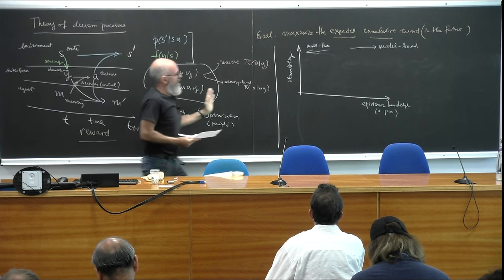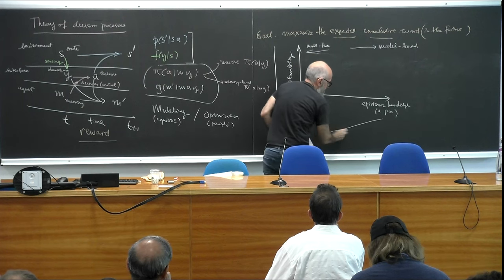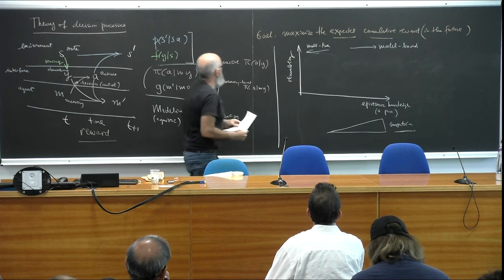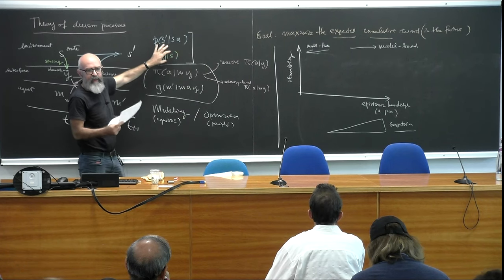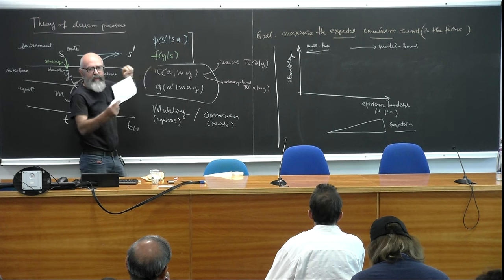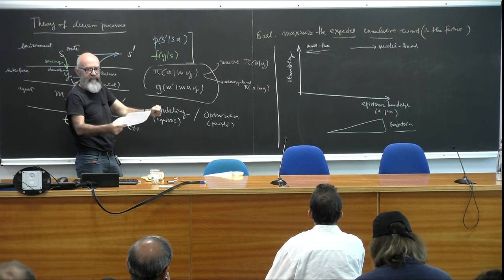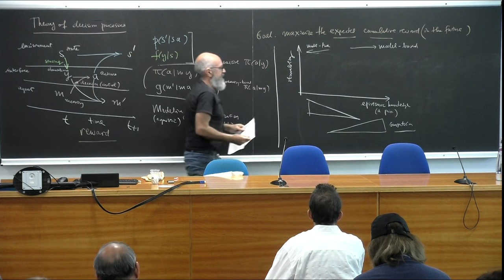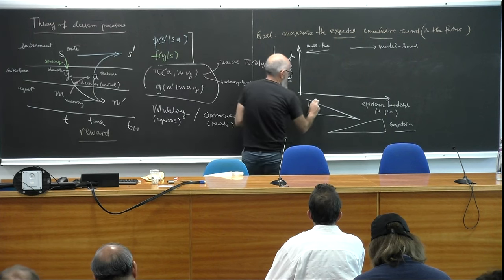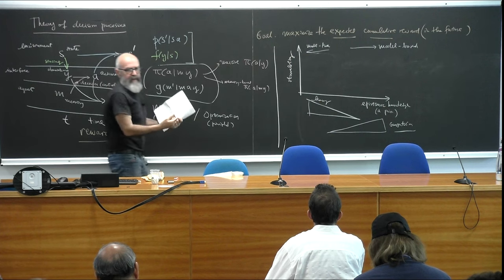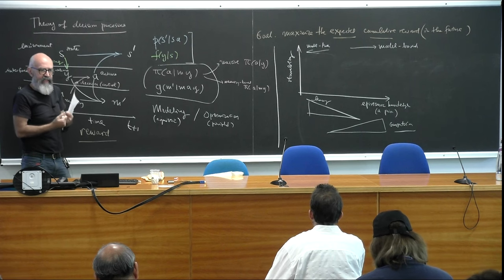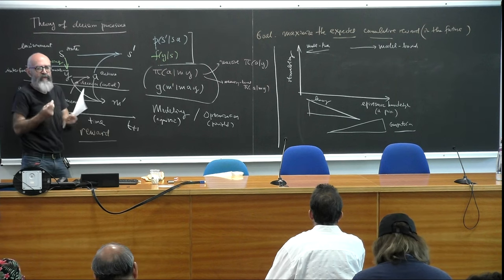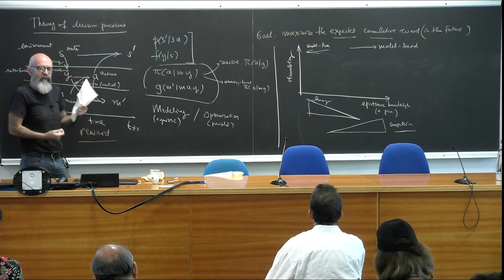On the model-based side, the problem of finding optimal policies given the model is a problem of planning — the inputs are the model and the reward, the outputs are the optimal policies; it's just a problem of computation. On the model-free end, it's more of a problem of learning: starting only from data and experience, you find the best behavior. Typically this is done by algorithms reflecting the idea of trial and error — you try something, get feedback, update, and improve.